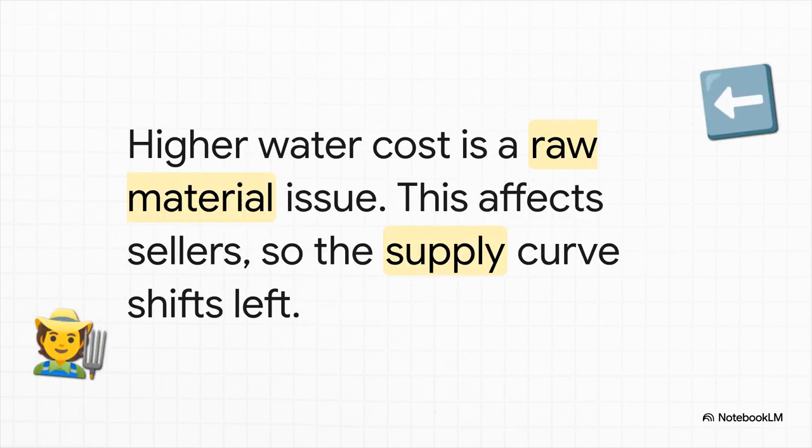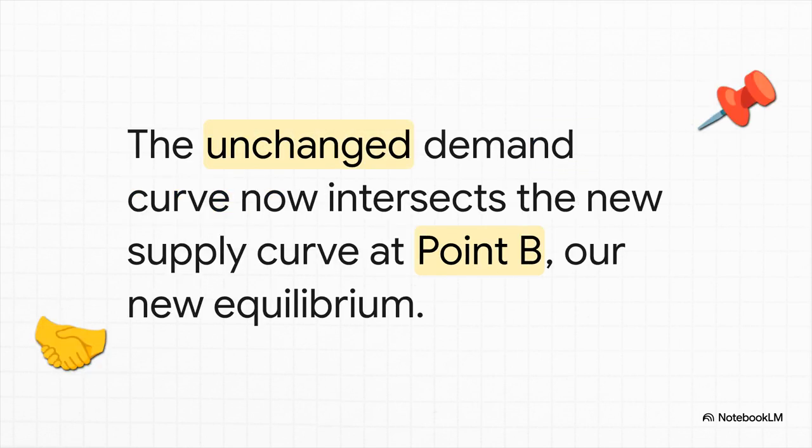Okay, now for the change. Because it's more expensive to grow each and every tomato, farmers are going to supply fewer of them at any given price. So we show this on the graph by shifting that entire supply curve over to the left, which just means there's a decrease in supply. And here it is, the after picture.